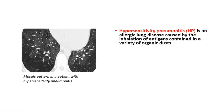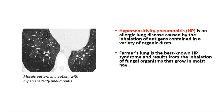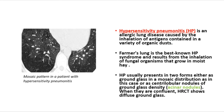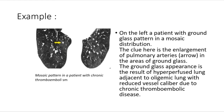Hypersensitivity pneumonitis (HP) is an allergic lung disease caused by inhalation of antigens in organic dusts; farmer's lung is the best-known HP syndrome, resulting from inhalation of fungal organisms in moist hay. HP typically presents in two forms: ground glass in a mosaic distribution, or as centrilobular nodules of ground glass density (acinar nodules). When confluent, HRCT shows diffuse ground glass.